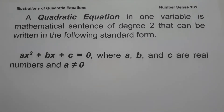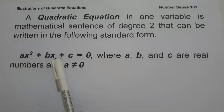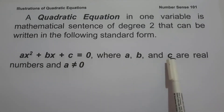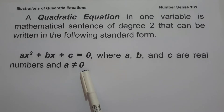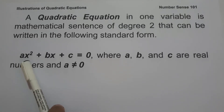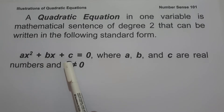In today's video we are going to start a series of discussion on quadratic equations. A quadratic equation in one variable is a mathematical sentence of degree two that can be written in standard form ax squared plus bx plus c equals zero, where a, b, and c are real numbers and a is not equal to zero. The highest exponent in a quadratic equation is two, where ax squared is the quadratic term, bx is the linear term, and c is the constant.